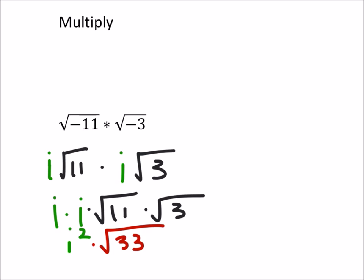The square root of 33 cannot be simplified, but i squared can. i squared is negative 1. So I would have negative 1 times the square root of 33 right there. Of course, we don't really have to show the 1.